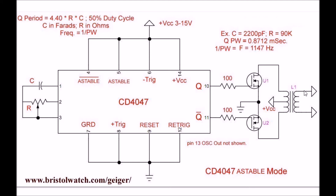When I measured it on my frequency counter, it came up to 1160 hertz. That's all there is to it — it's that simple. So if you want to generate a high voltage, this is low power and far more efficient than the transistor feedback type. This is what you want to use: the CD4047 in its astable mode. Thanks for listening.